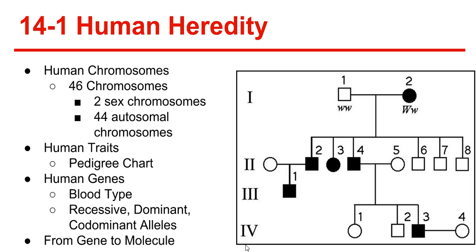Human traits. The pedigree chart — pedigree charts are used to study how traits are passed from one generation to the next. Genes and the environment: many traits are polygenic, which means they're controlled by many genes. Personal traits are only partly governed by genetics; they're also influenced by many other factors, including the environment.